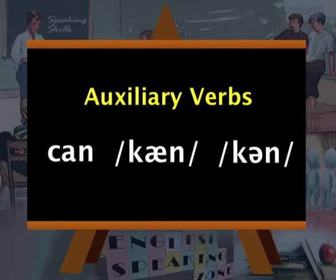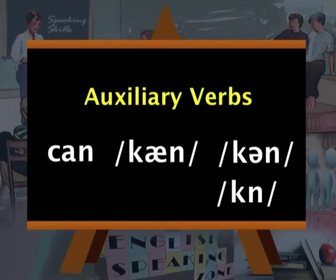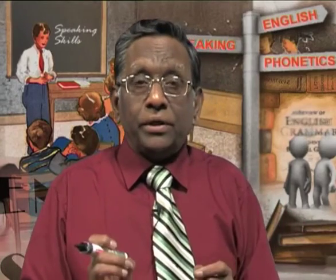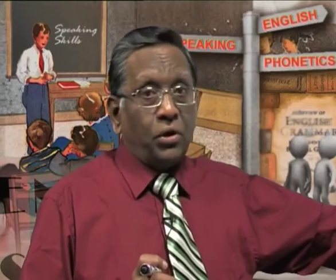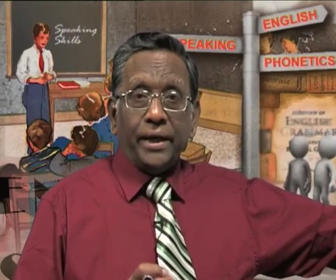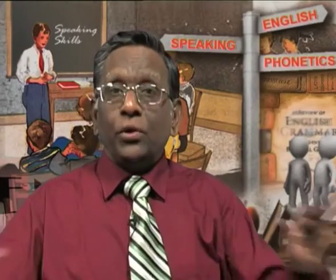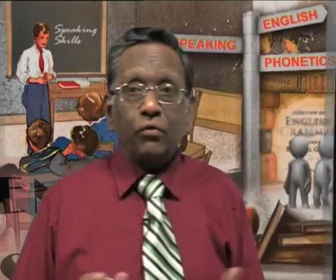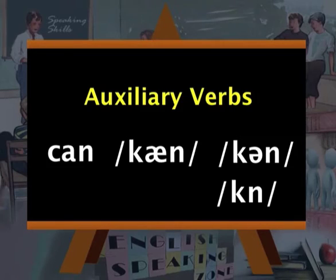Let's take another auxiliary verb 'can.' The strong form is 'CAN' but the weak form is 'c'n' or sometimes just 'kn.' We say 'I can do it' — not 'I CAN do it.' It is unstressed and therefore weakened to 'I c'n do it.' If you use the strong form and say 'I CAN do it,' it conveys the meaning that 'I am able to do it but I will not' — that is a very special context. In an ordinary context, we just use the weak form 'can.'